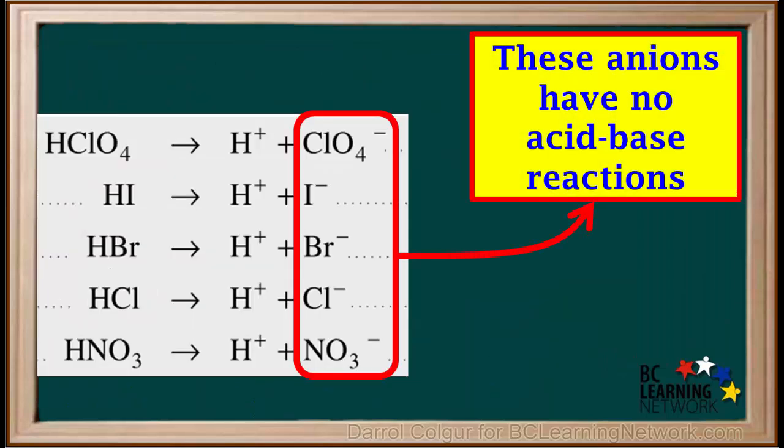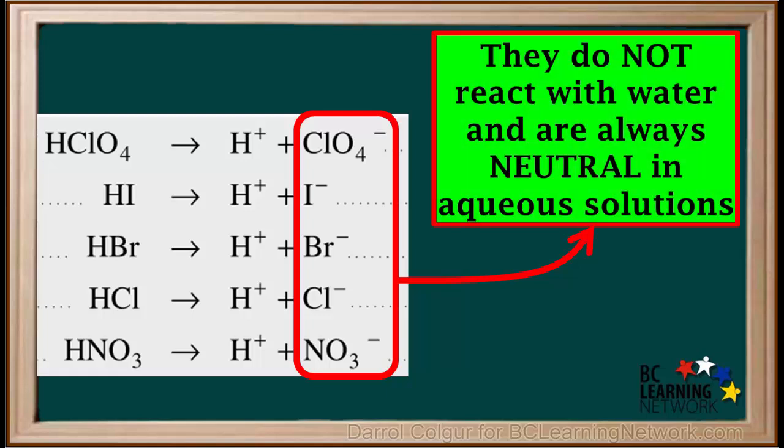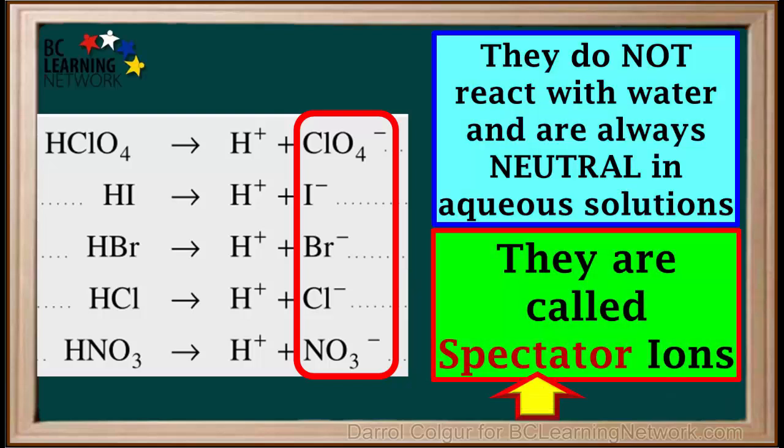So these five anions have no acid base reactions. So they do not react with water and are always neutral in aqueous solutions. Therefore, they are called spectator ions.